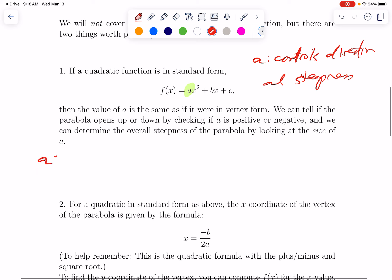So for example, if a is equal to 1 half, it opens upward, but it's not particularly steep. Because a is positive, opens upward, but it's less than 1, so it's less steep than normal x squared.